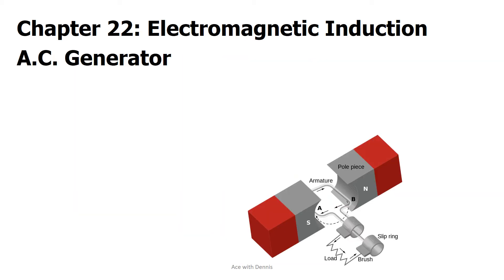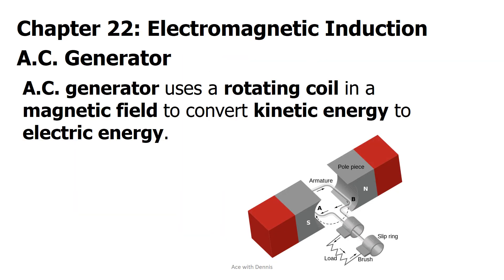AC generator. AC generator uses a rotating coil in a magnetic field to convert kinetic energy to electric energy.